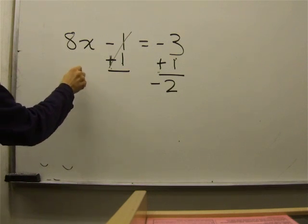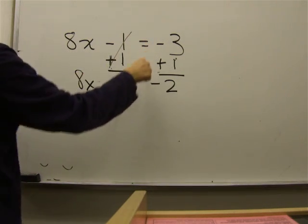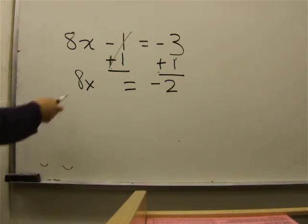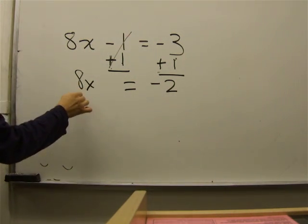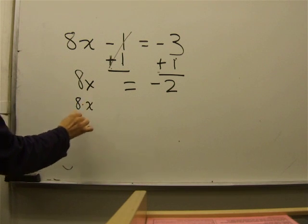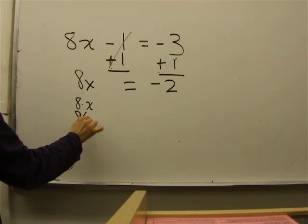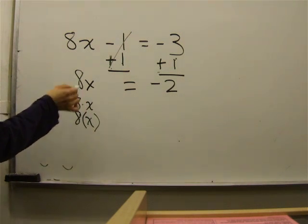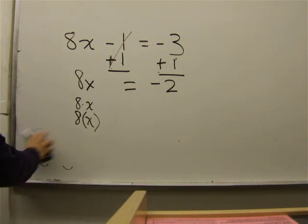Bring down this term, 8x. Bring down your equals. We still have the x with a number. This is really telling you 8 times x. Again, you do the opposite. If this is multiplication, the opposite of multiplication is division.